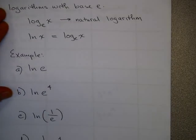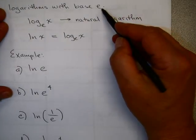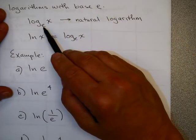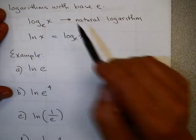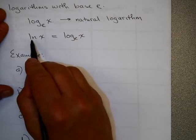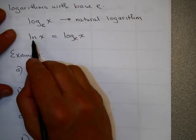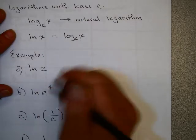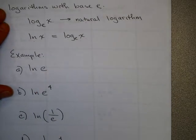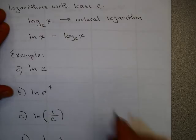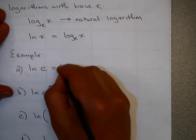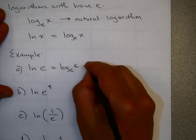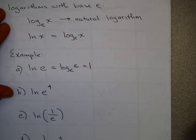Logarithms also can have a base of any positive number. Since e is a positive number, logarithms can have a base e. Log base e of x is called the natural logarithm, and we use a special notation: ln(x). Remember, ln(x) means log base e of x. We're going to do these problems both by hand and by calculator.